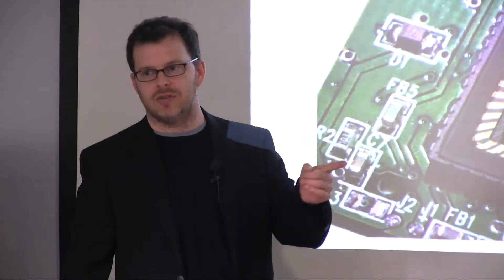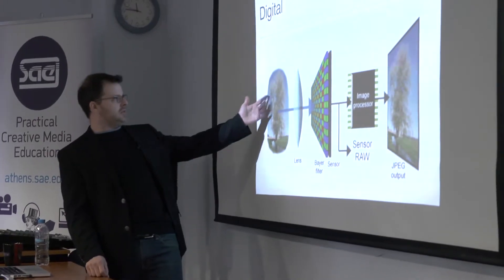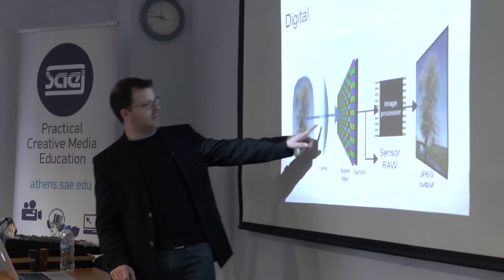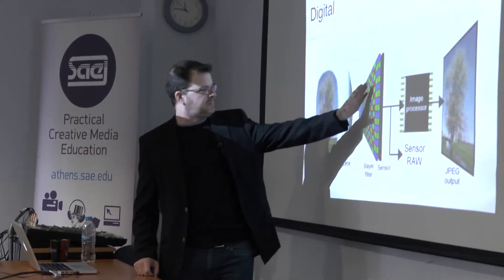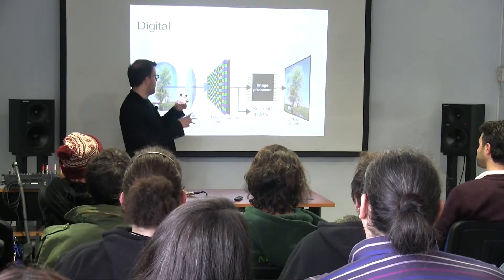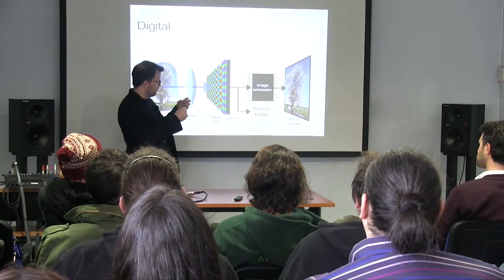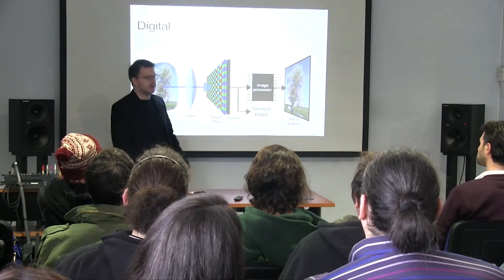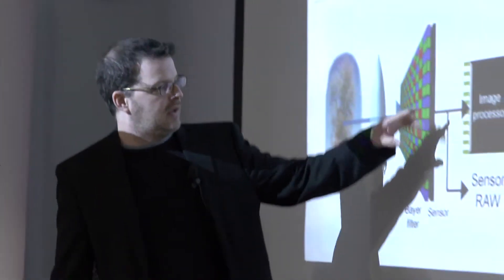That signal is then recorded as a series of ones and zeros representing that electrical process. Here's how the image works: an ugly tree comes through a lens, hits a filter which measures red, green, and blue. The amounts of red, green, and blue get combined to make all the other beautiful colors we see. It gets processed in a computer and made into an image representing that amount of light — it all happens instantaneously.